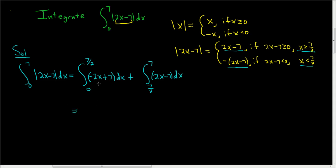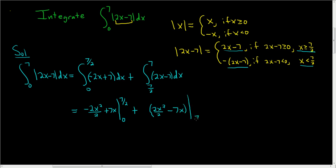To integrate, we'll use the power rule. The first integral gives negative 2x squared over 2 plus 7x, evaluated from 0 to 7/2. The second integral gives 2x squared over 2 minus 7x, evaluated from 7/2 to 7.